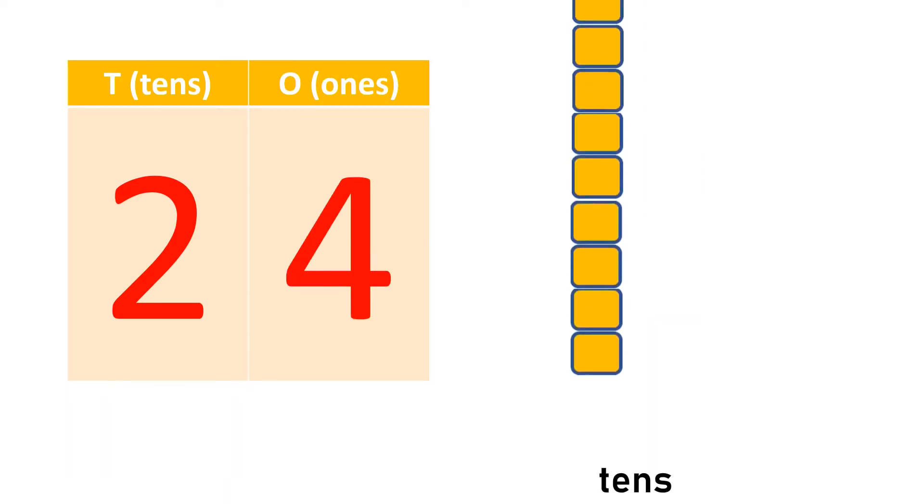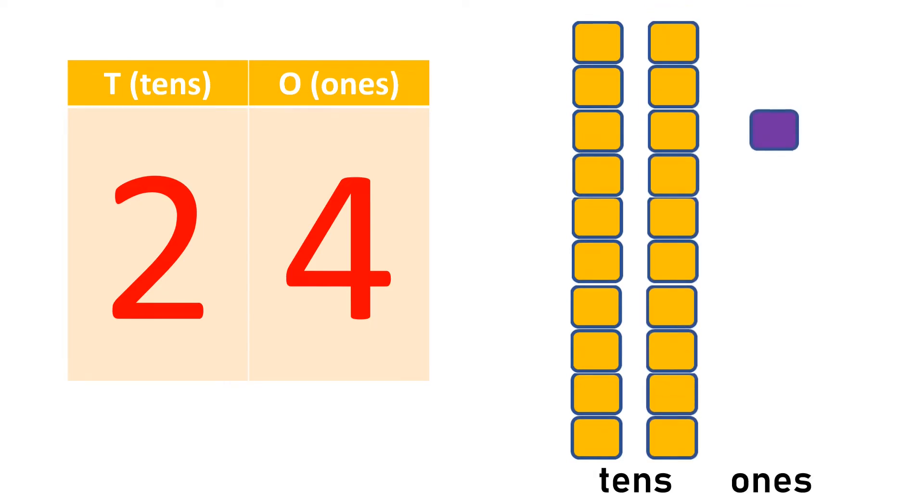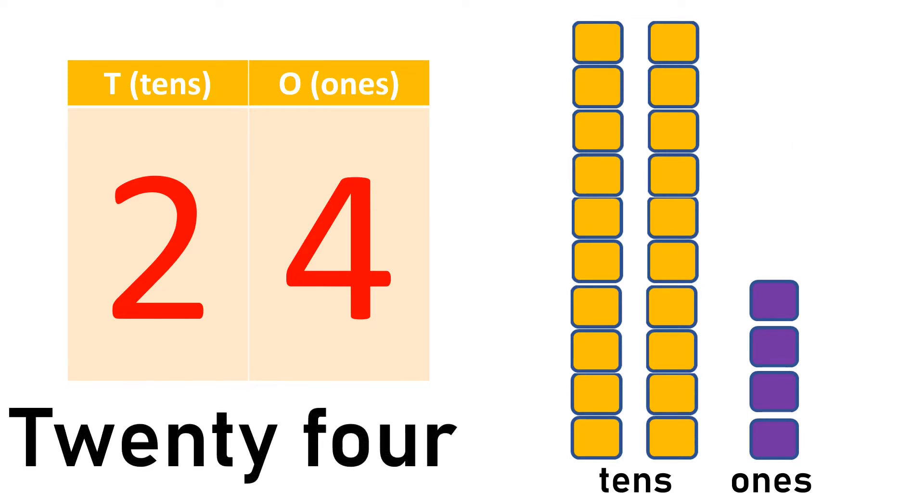2 tens and 1, 2, 3, 4, 4 ones makes 24, TWENTY-FOUR.